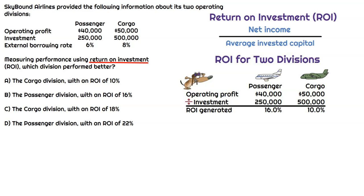For passenger, we'll take $40,000 of operating profit divided by investment of $250,000. That means the return on investment is 16%. Same calculation for cargo — we'll take operating profit of $50,000 divided by investment of $500,000, and that gives us an ROI of 10%. A higher ROI means the division performed better, so passenger is the winner. The correct answer is the passenger division with an ROI of 16%.